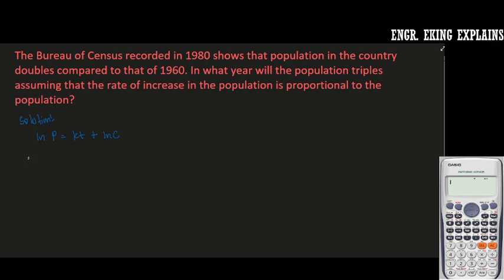At T is equal to 0, that is at 1960, so our P is equal to P sub 0.